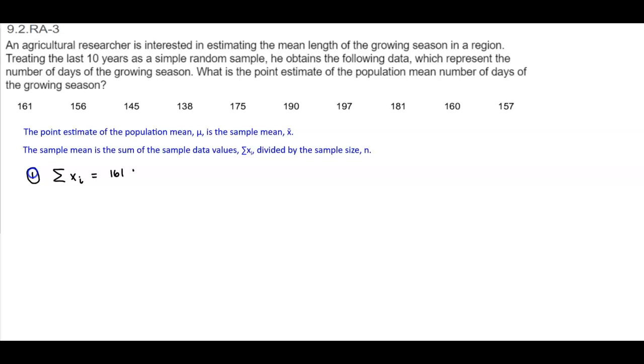So we have 161 plus 156 plus 145, 138 plus 175, plus 190, plus 197, plus 181, plus 160, plus 157. When we add them all up, we get a value of 1660.